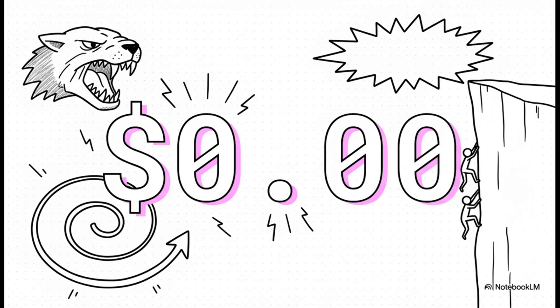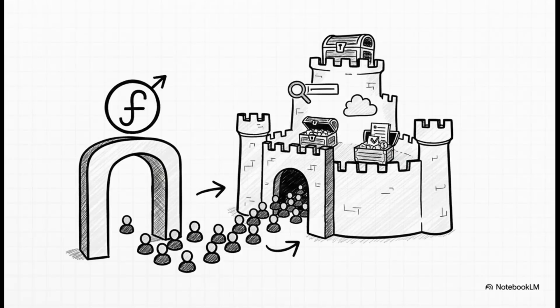It's a textbook example of a strategy the source calls predatory pricing. Using your dominant position to offer something for free, making it almost impossible for anyone else to even compete. And here is the strategic genius of it all. The AI doesn't have to be the thing you pay for. It just becomes a free, incredible feature that locks you deeper into the ecosystem.